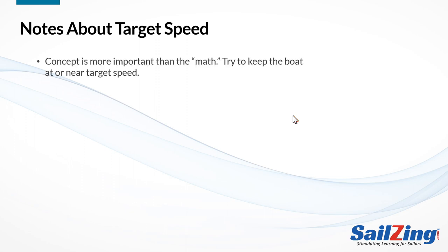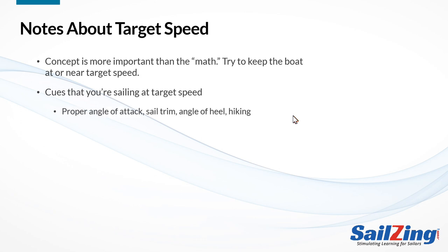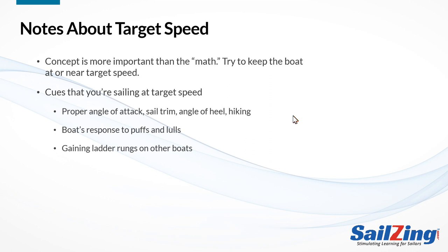Here are some important notes about target speed. Don't worry about the math and geometry we've just gone through — just remember that there is a best speed and associated heading angle to maximize your VMG, and the sailors that keep their boats at or near that target speed will make the most progress upwind or down. Since we don't have instruments, we need other cues to tell us when we're at the target speed. The target speed concept is based on the fact that you're sailing your boat as fast as possible — that means the proper angle of attack, sail trim, angle of heel, and hiking. Also, once you learn how to respond to puffs and lulls properly, you will feel the difference and you will want to get that feel every time. You can always tell if you're gaining on other boats by comparing ladder rungs — see our video on ladder rungs for how to do this.